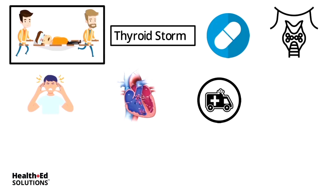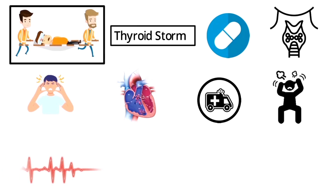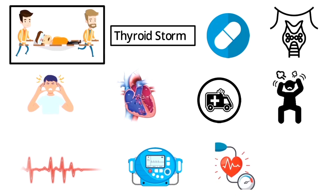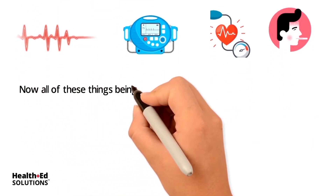The signs and symptoms of thyroid storm are all those things we discussed, only they are extra hyper. You have an extremely high heart rate, dysrhythmias like AFib with RVR, extremely high blood pressure — very dangerously high — and then hyperpyrexia, or extremely high dangerous temperature.